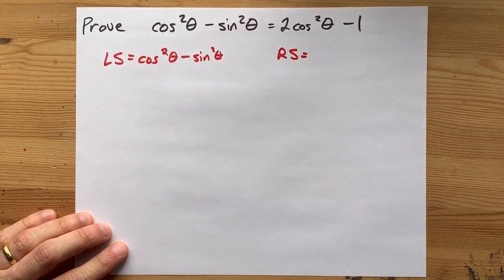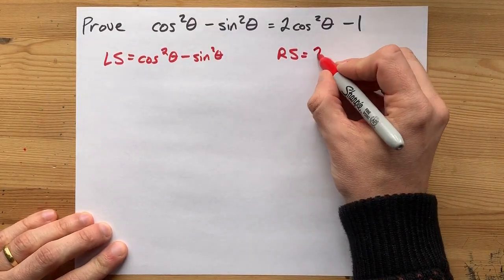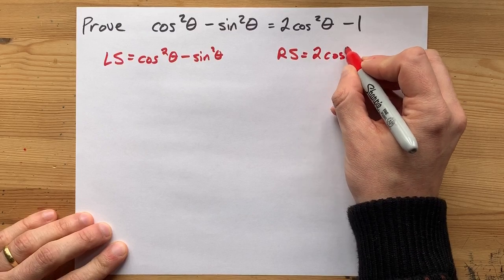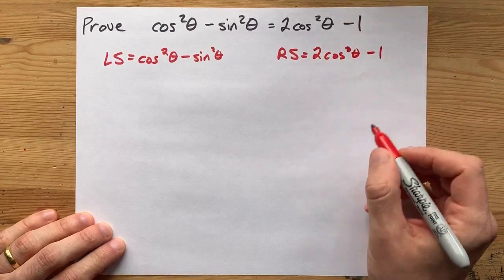Well, the first thing I do to solve a trig identity is to break it up into the left and right hand sides, so just let me do that right off the bat.